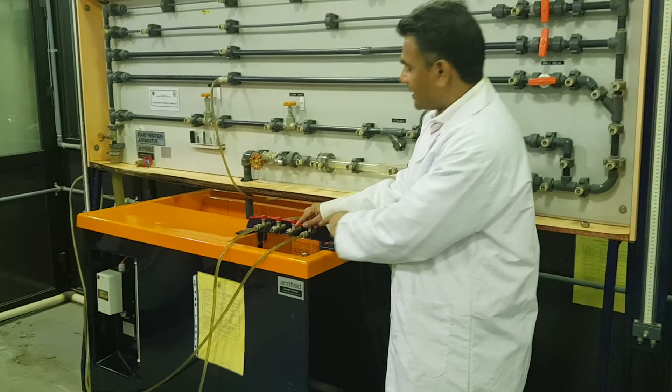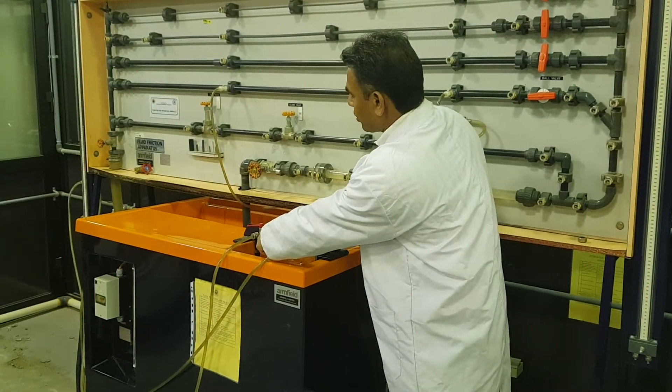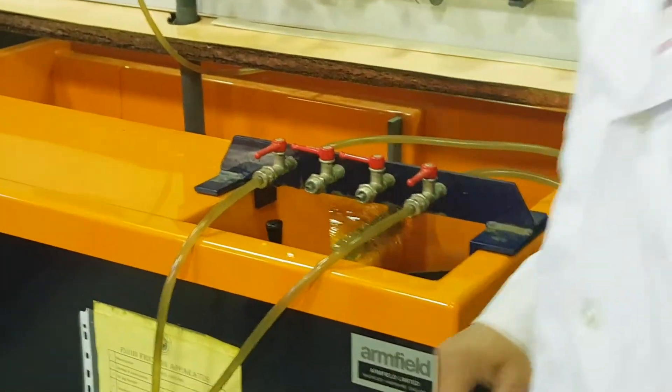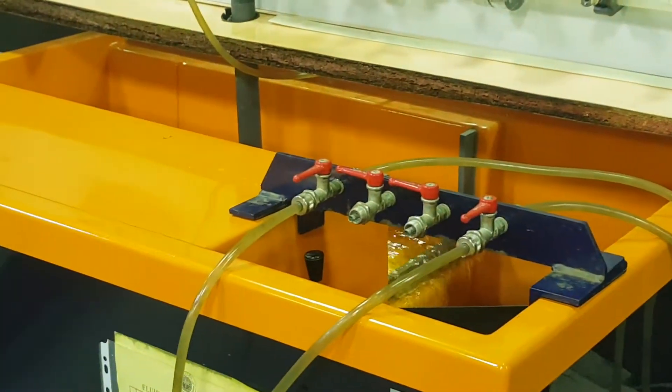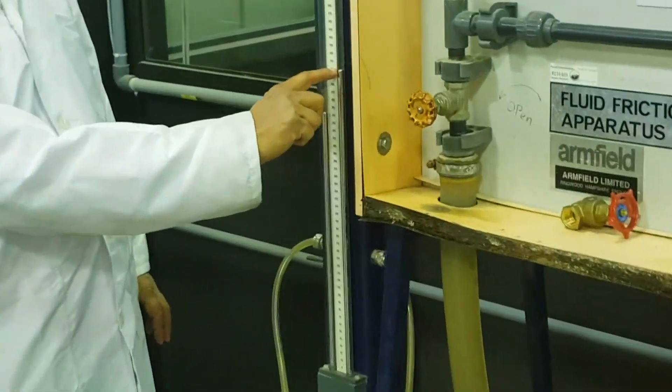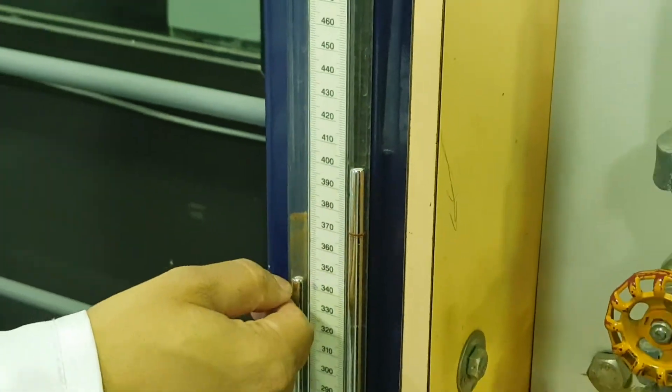Now if I operate this, the flow will not close this. See if the flow is not closing, so means there is no air. So I will make it, and now mostly air is gone. Now record the reading H1, record the reading H2. The higher is H1, lower is H2.